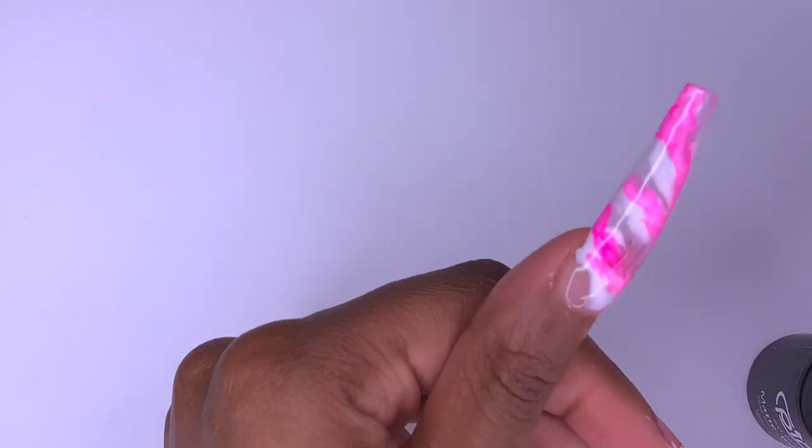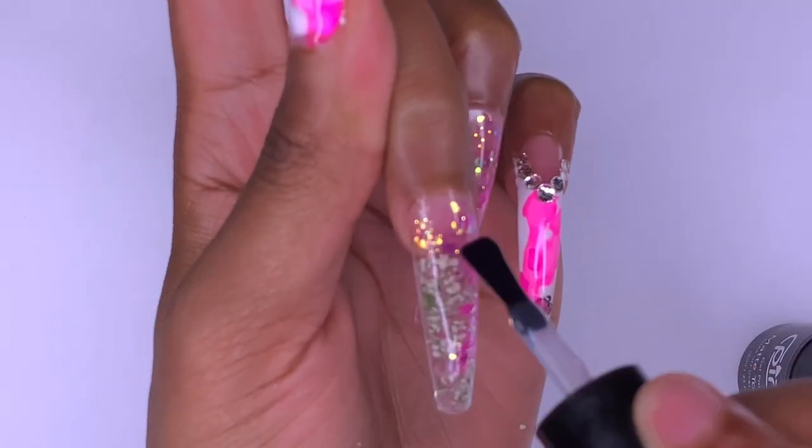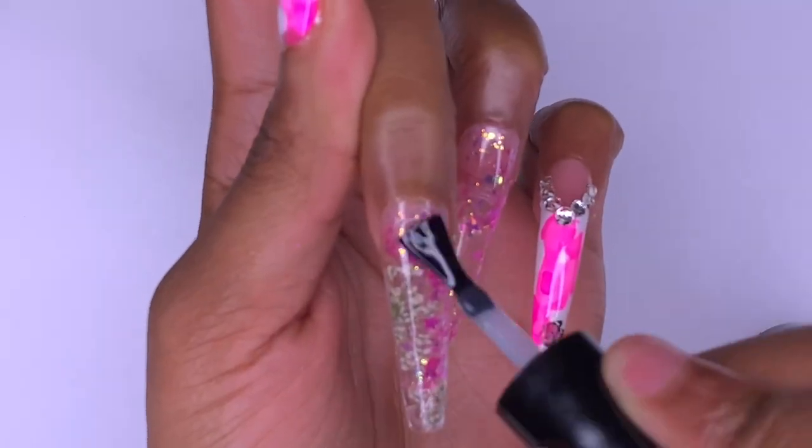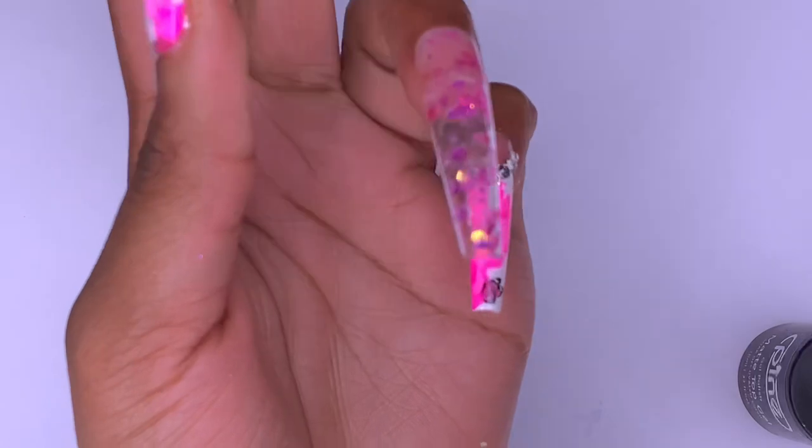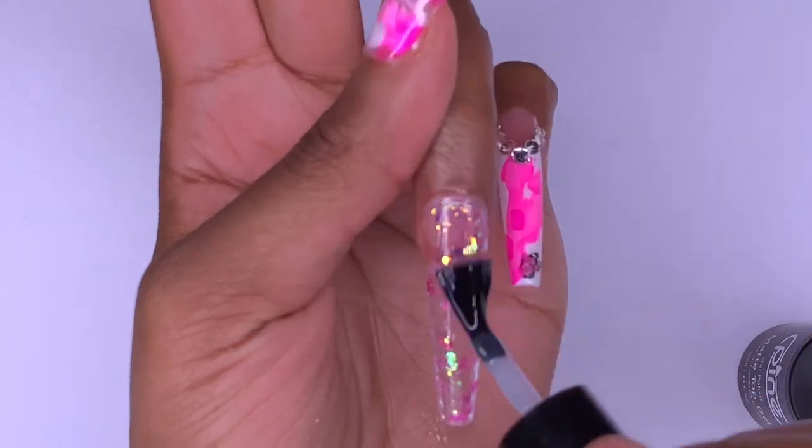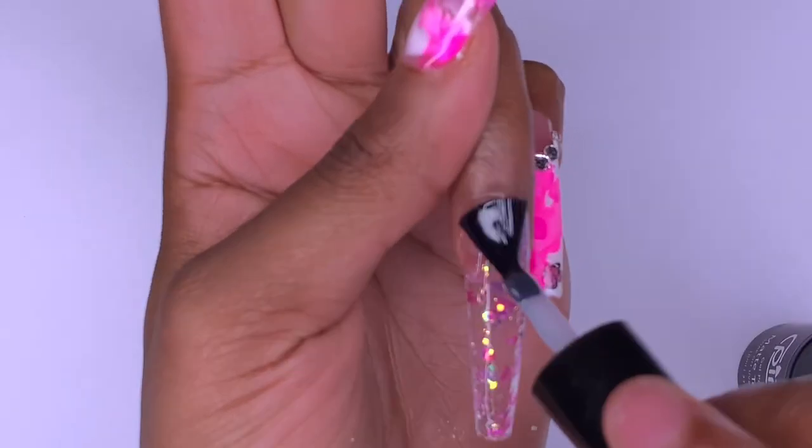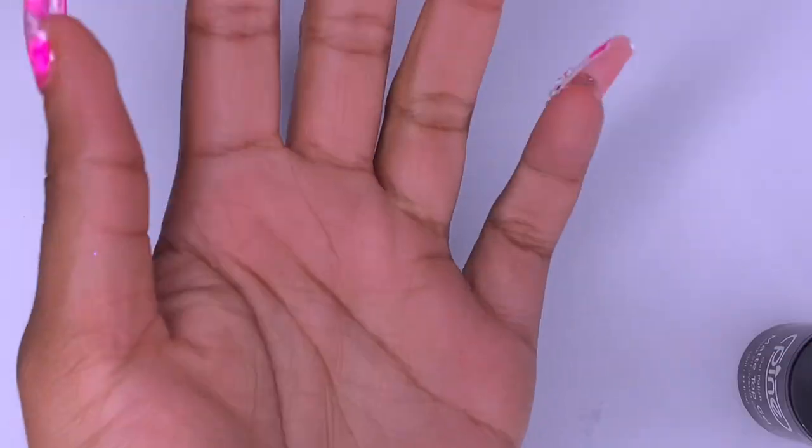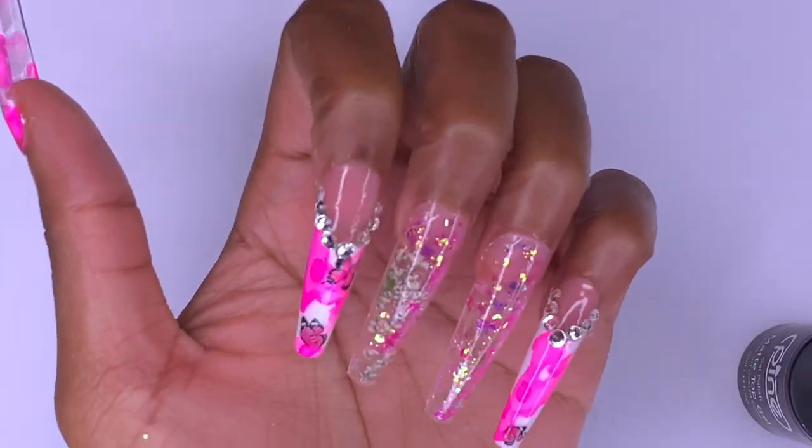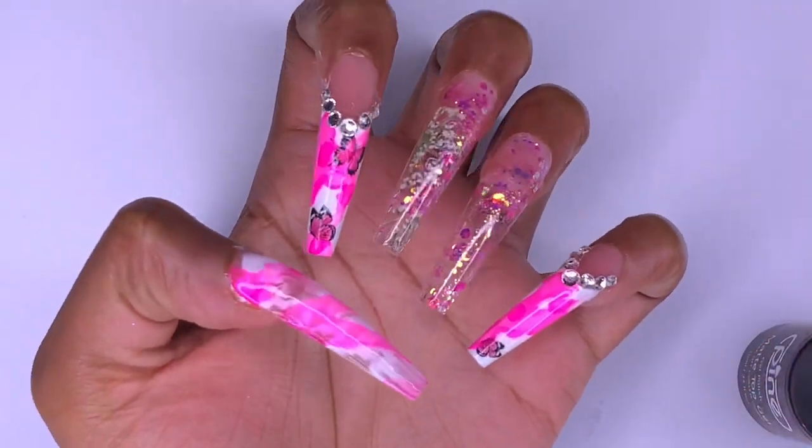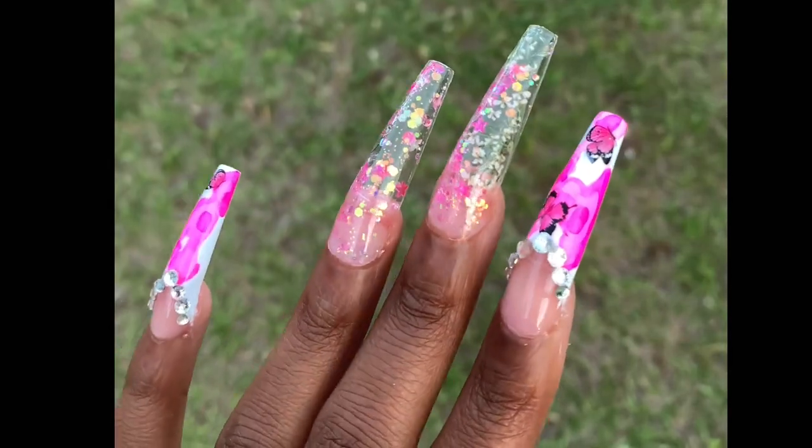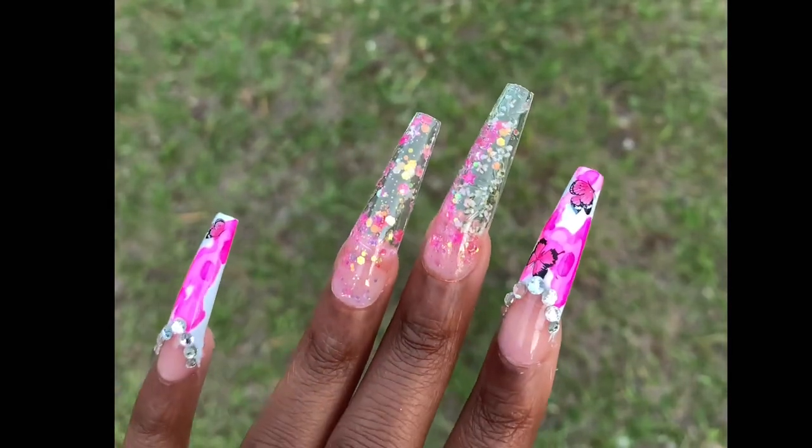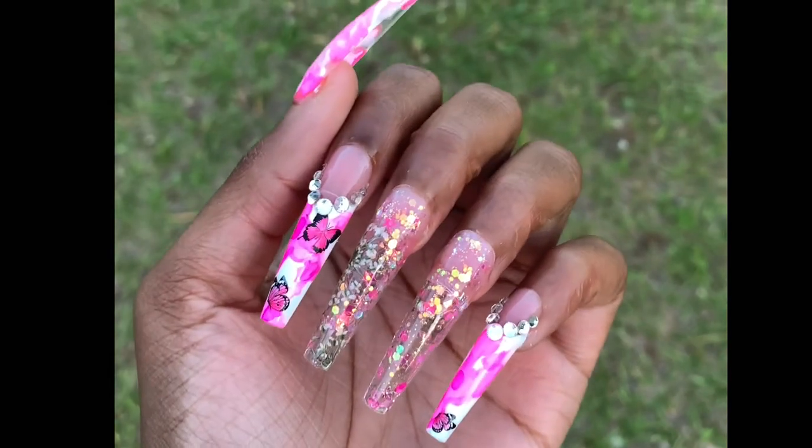Now that I'm done, I'm just going in with the top coat. I'm doing matte on the thumb and then just putting some clear on top of those glitter nails. The pointer and pinky already have top coat on them. That's pretty much it for this nail design. I hope that you all enjoyed the video. If you did, be sure to give it a thumbs up, leave a comment down below, and subscribe to my channel so that you don't miss out on any of my upcoming videos. Bye!